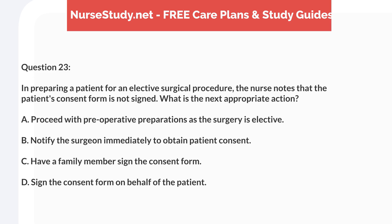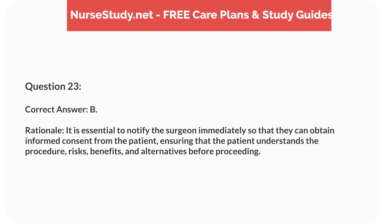Question 23. In preparing a patient for an elective surgical procedure, the nurse notes that the patient's consent form is not signed. What is the next appropriate action? A. Proceed with preoperative preparations as the surgery is elective. B. Notify the surgeon immediately to obtain patient consent. C. Have a family member sign the consent form. D. Sign the consent form on behalf of the patient. Correct answer: B. Rationale: it is essential to notify the surgeon immediately so that they can obtain informed consent from the patient, ensuring that the patient understands the procedure, risks, benefits, and alternatives before proceeding.